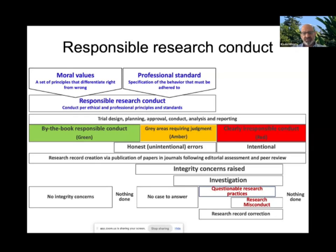There is also an area where nobody complains and nobody investigates, and integrity concerns may go unchecked and unnoticed in the existing scientific record. This is where systematic reviews come in — when they include trials, they have a responsibility to make an assessment of the integrity of those included trials.